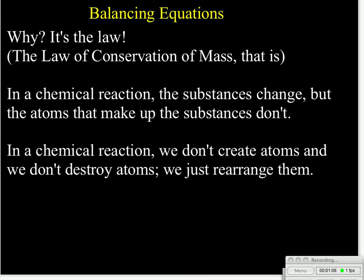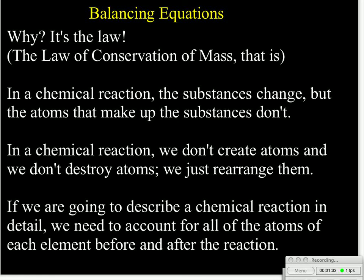In my class, I did a demonstration where we took water and we put it into a Hoffman apparatus, and we separated it chemically into oxygen and hydrogen. Well, when we did that, we started out with one substance, water, and we ended up with two different substances, hydrogen gas and oxygen gas. But we never created atoms or destroyed atoms, we just put them in different combinations. So for balancing equations, the reason why we do it is, if we're going to describe a chemical reaction in detail, we need to make sure we account for all of the atoms of each element before and after the reaction to make sure that we aren't describing it in ways that we've created or destroyed atoms.